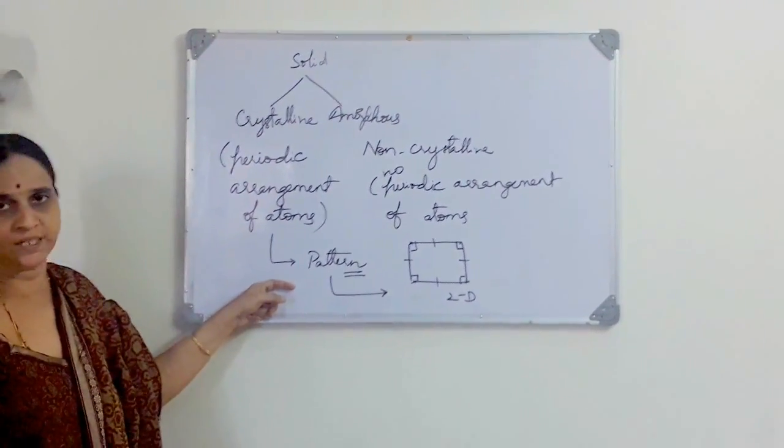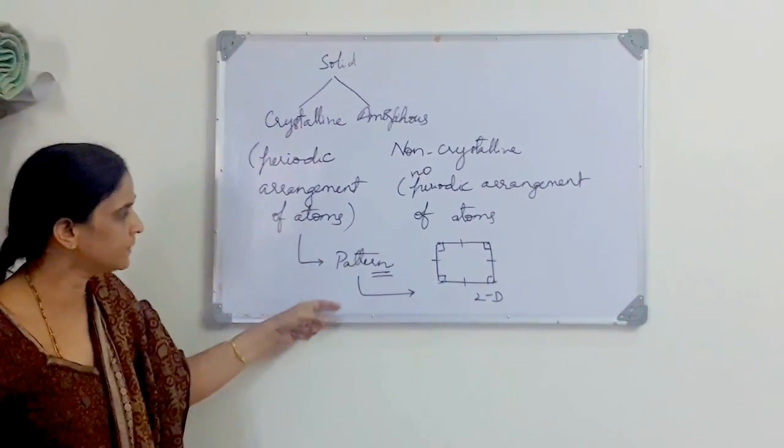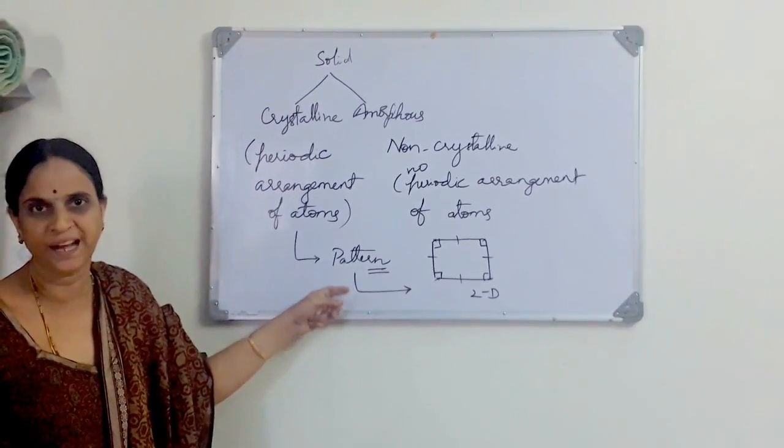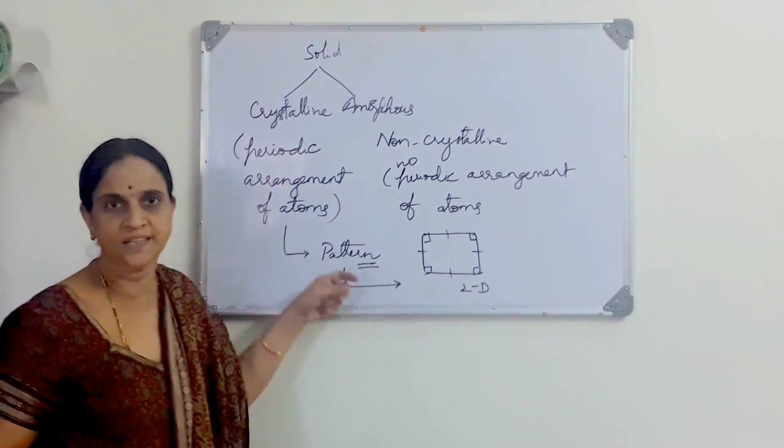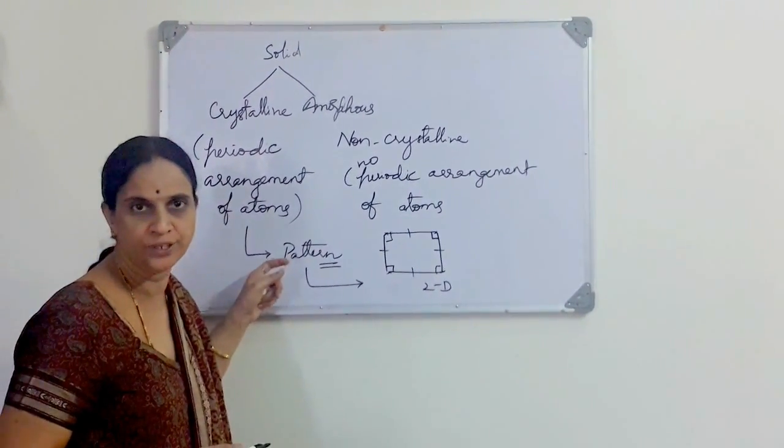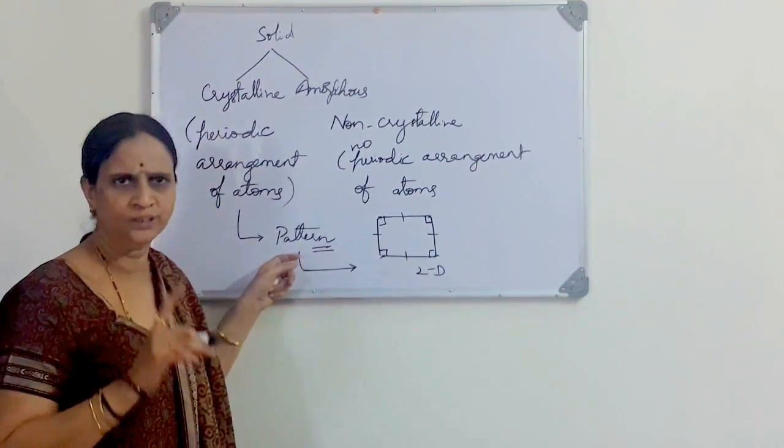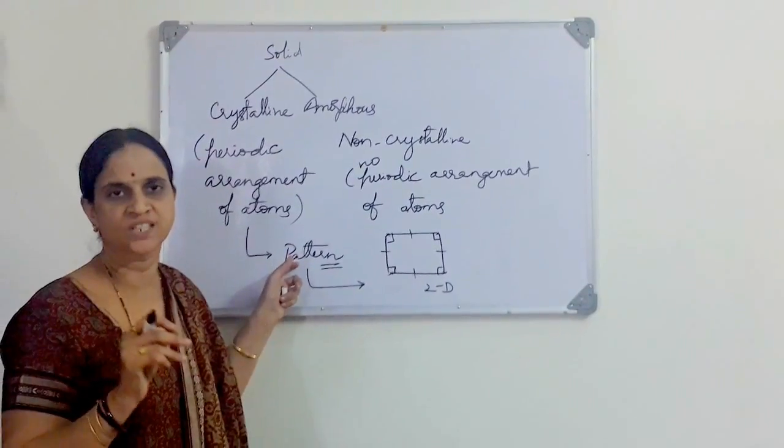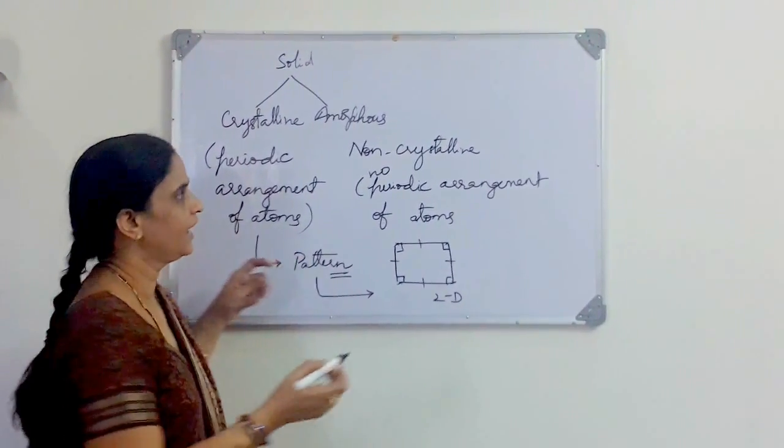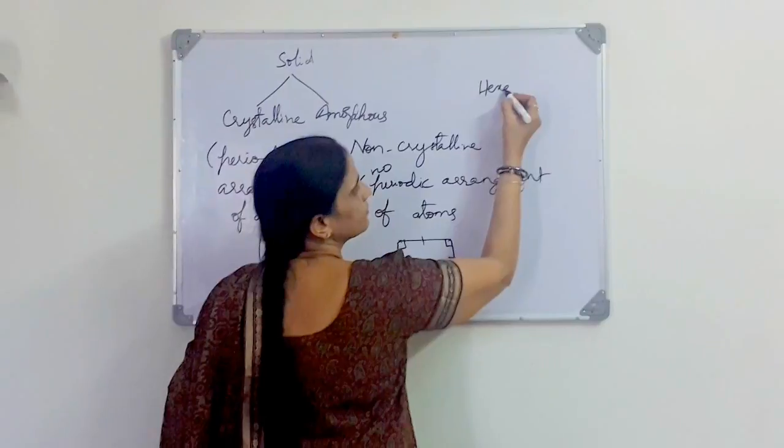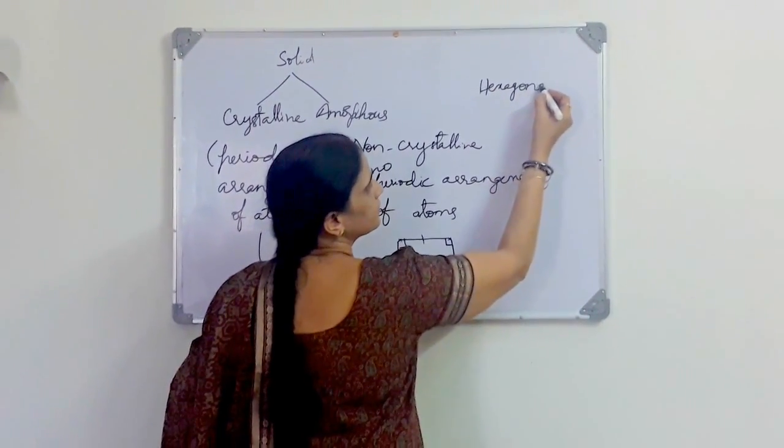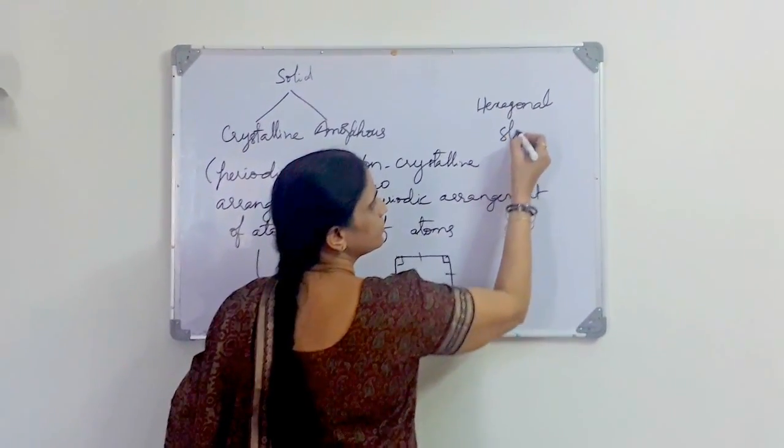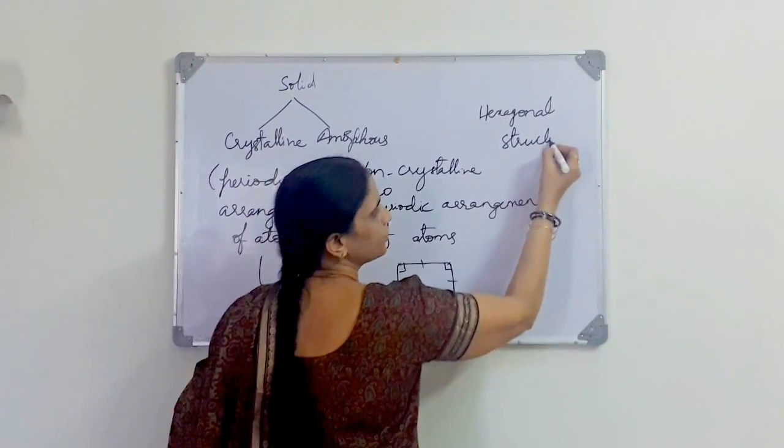Similarly, in crystalline solids, the periodic arrangement of atoms follows certain patterns. Let us see what kind of patterns are given to us. Among them, one particular pattern I want to show you, which is called a hexagonal structure.